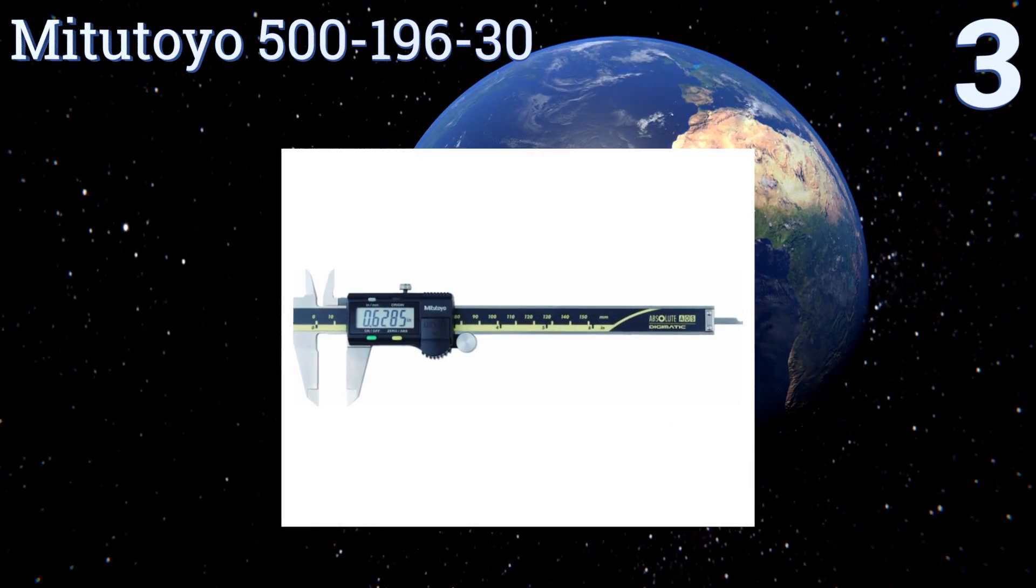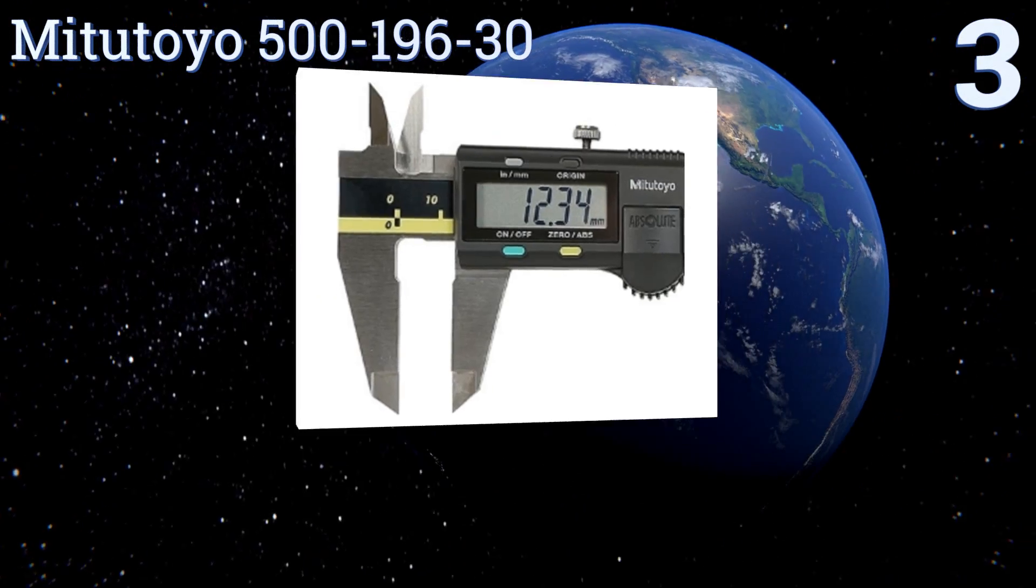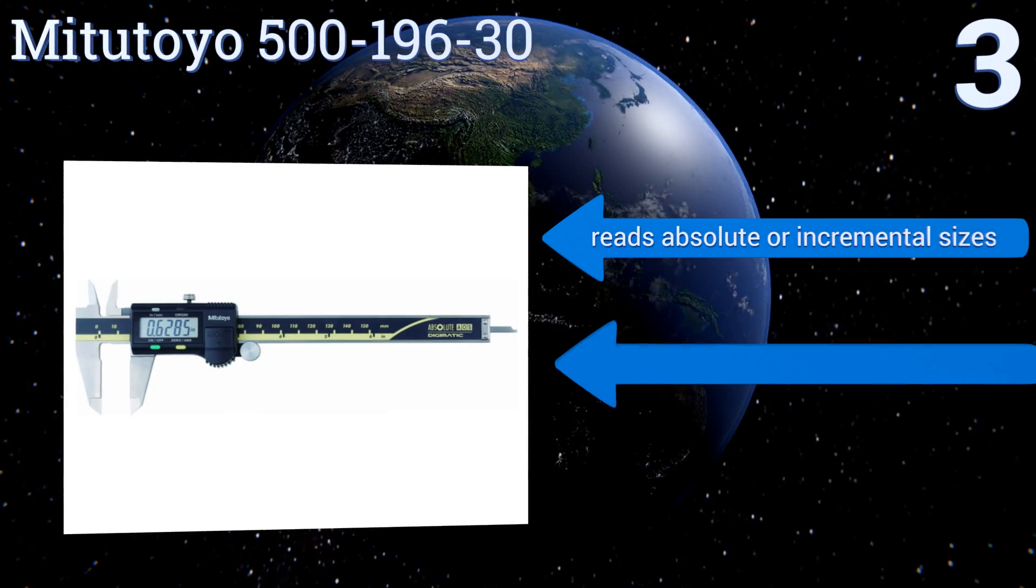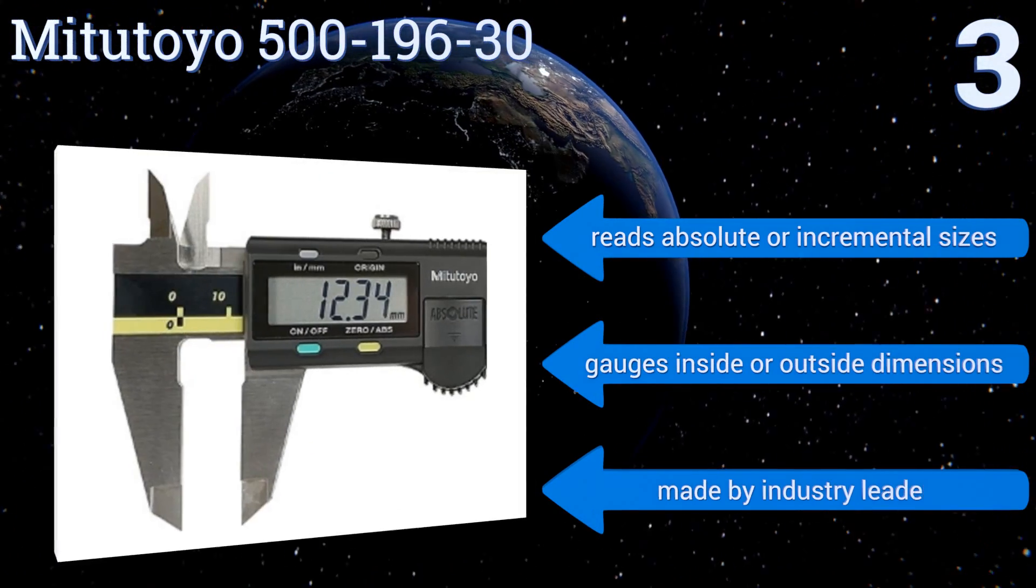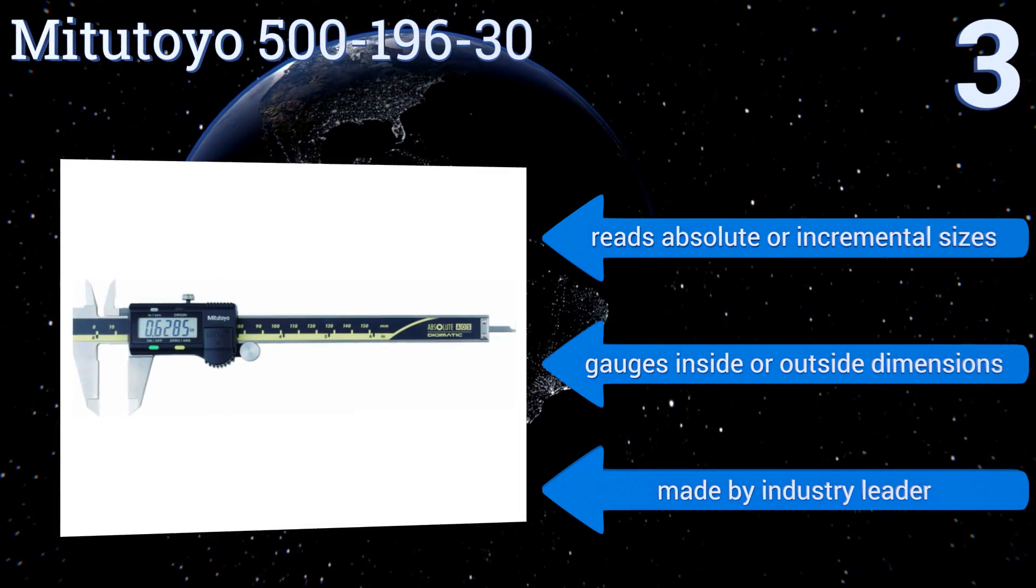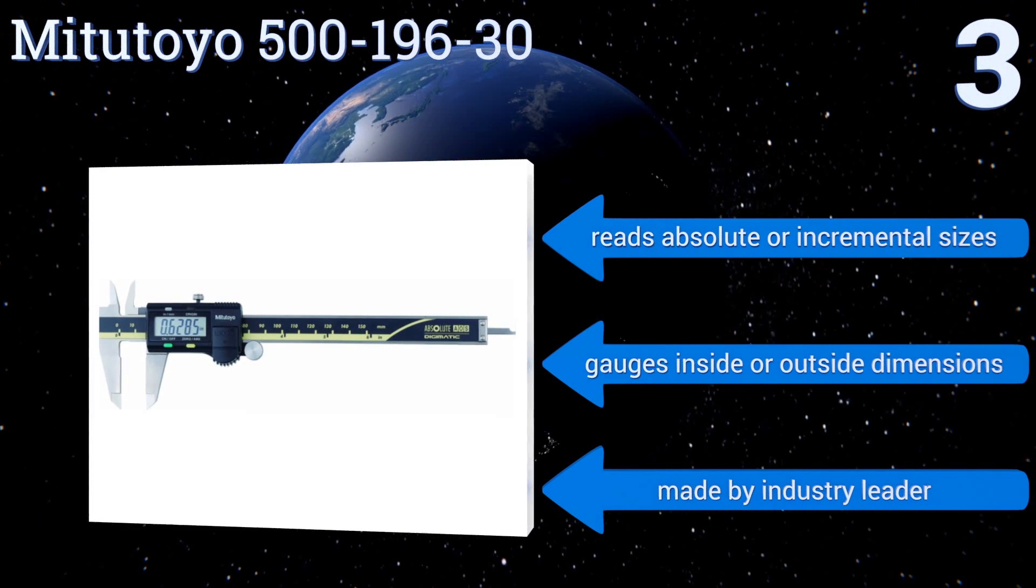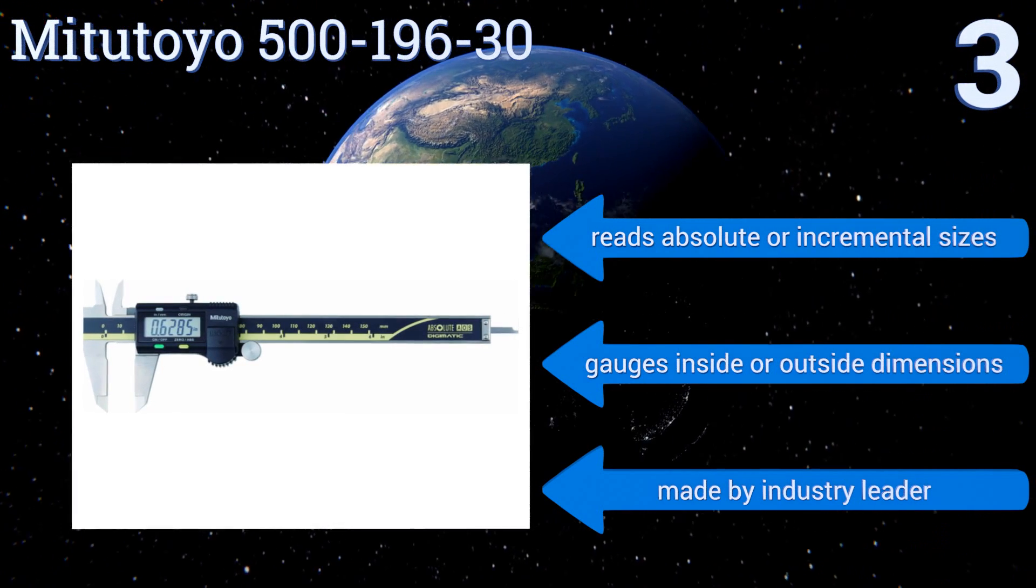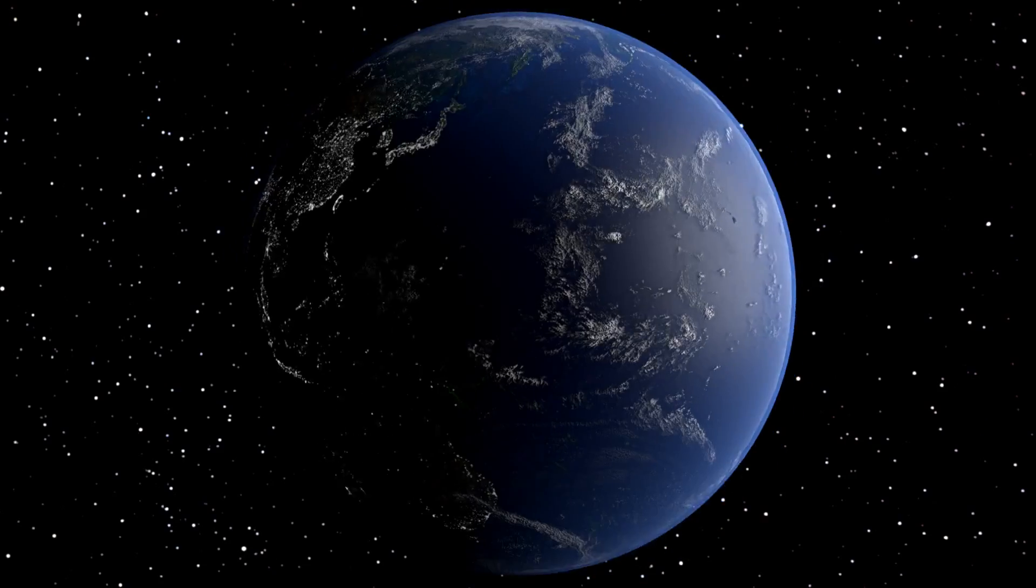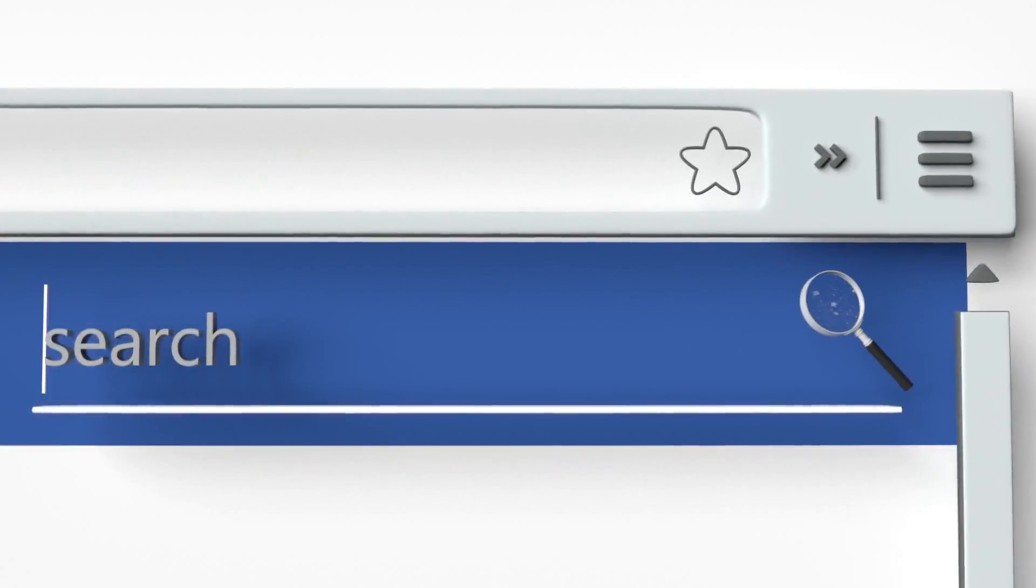Nearing the top of our list at number three, capable of tackling the most demanding jobs, the high accuracy Mitutoyo 500-196-30 measures up to six inches in increments of 0.0005 of an inch. Proprietary technology renders it resistant to foreign substances like oil and dirt, and both a case and a battery are included. It can read absolute or incremental sizes and can gauge inside or outside dimensions. It's made by an industry leader.